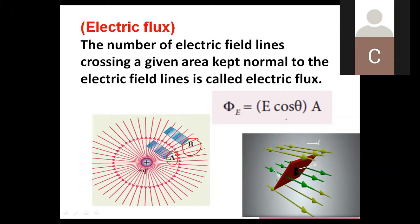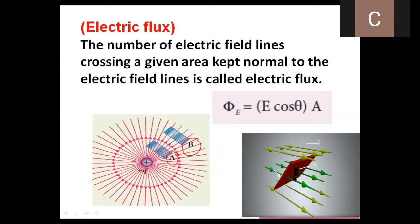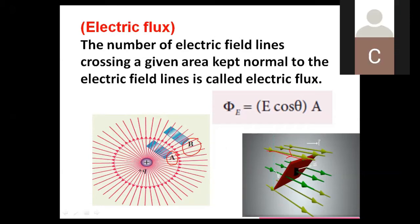So phi is equal to E·A·cosθ. In this second diagram, we are considering one area where electric field lines pass through it. These arrow lines represent the electric field lines passing through some area. That area and the electric field lines — that surface — are perpendicular to each other.